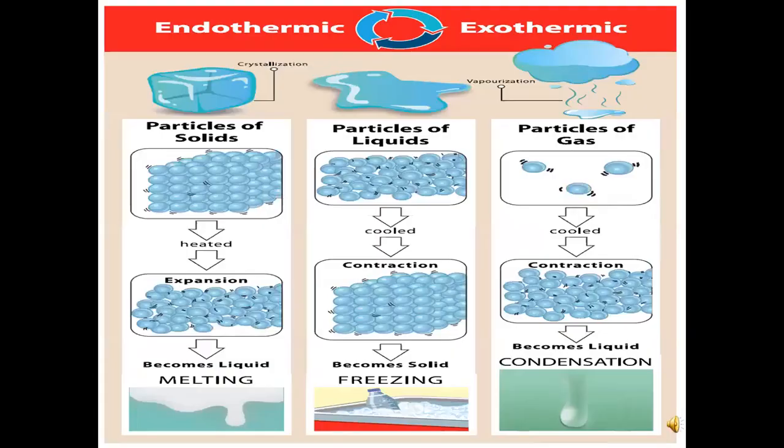Change in temperature — chemical reactions will be either endothermic or exothermic. Endothermic means heat is absorbed; exothermic means heat is liberated. For example: when a solid is heated it expands and becomes liquid (melting); when liquid is cooled it contracts and becomes solid (freezing); when gas molecules cool they become liquid (condensation). These are examples of endothermic and exothermic changes.